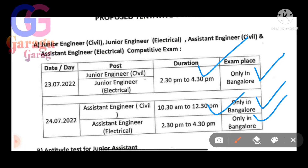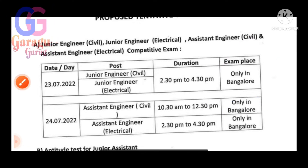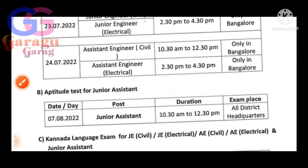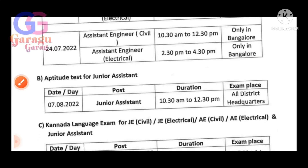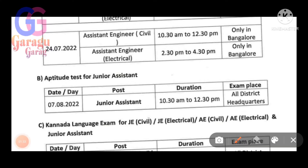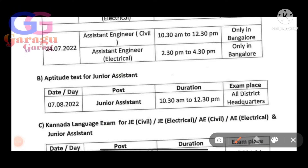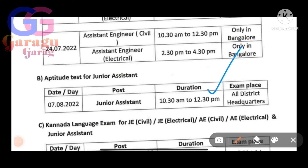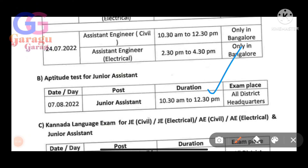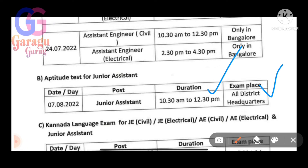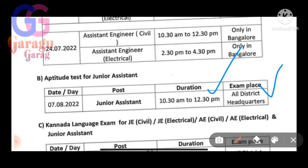Assistant Engineer — civil and electrical — is scheduled on the 24th. For the Junior Assistant, the exam will be conducted in all districts from 10:30 to 12:30, at all district headquarters.